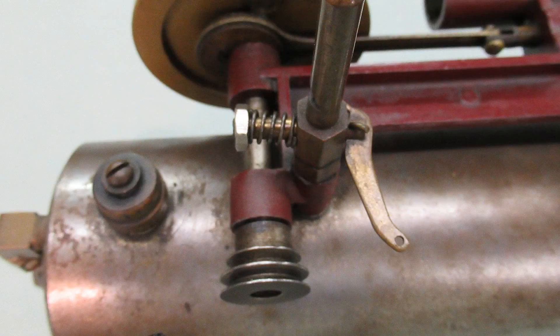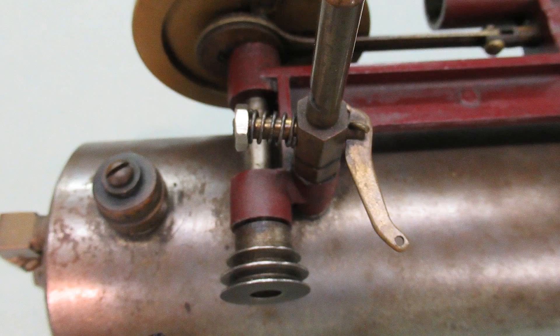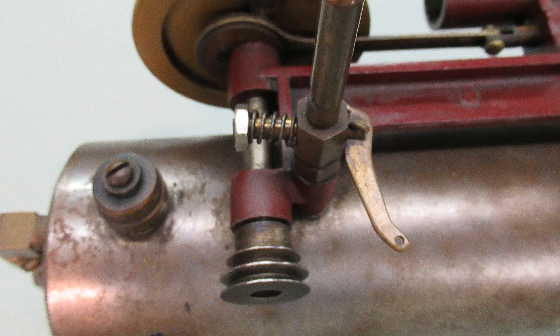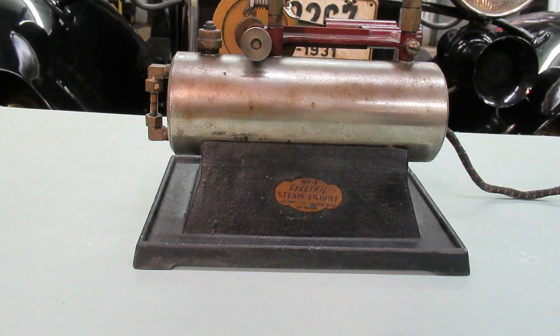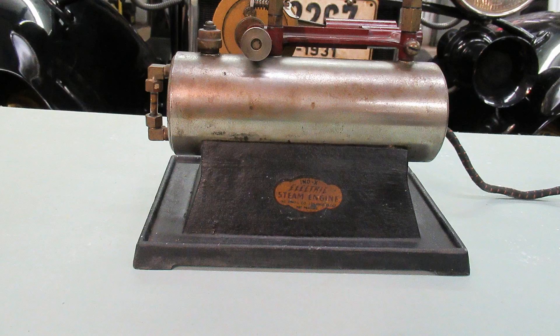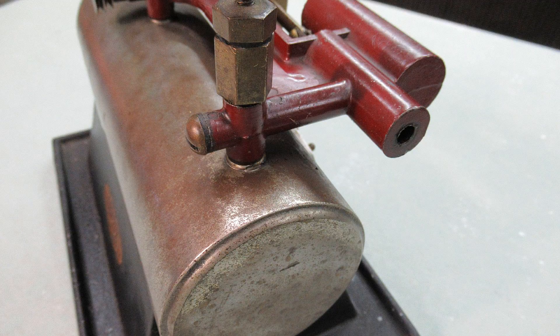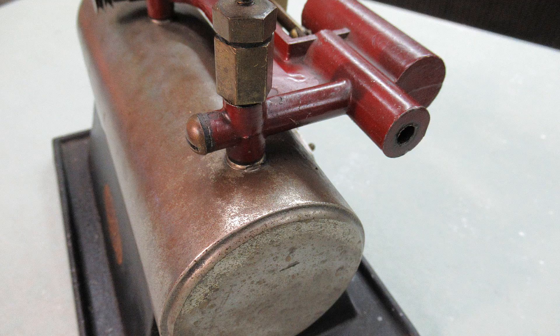The engine features a whistle, throttle, and takeoff pulley to boot. The bore is approximately three-quarters of an inch with a one-inch stroke, and the engine weighs about seven pounds. The boiler is three inches in diameter by about eight inches long, and it's heated by a 120-volt heating element.